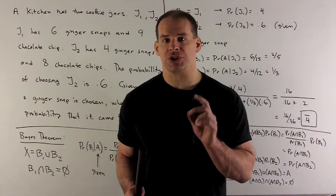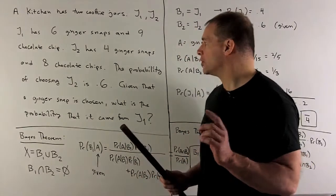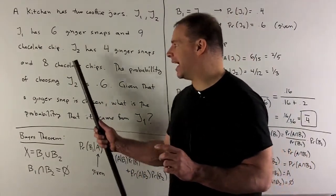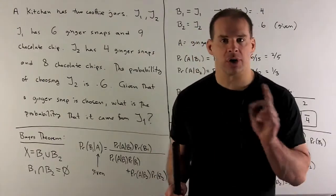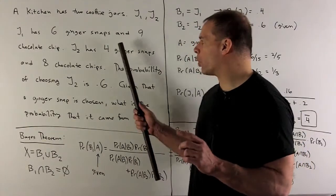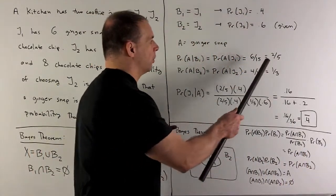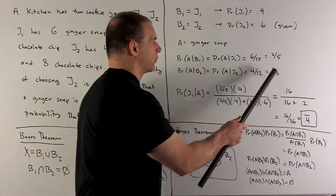Probability of getting a ginger snap given jar two. In this case, we ignore the data from jar one. So I'll have four ginger snaps, eight chocolate chips, 12 cookies. So our probability of picking a ginger snap is going to be four over 12. So those will simplify to two over five, one over three.